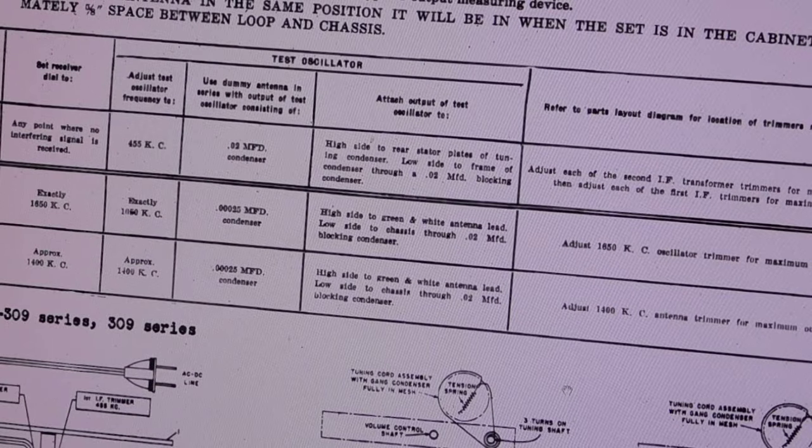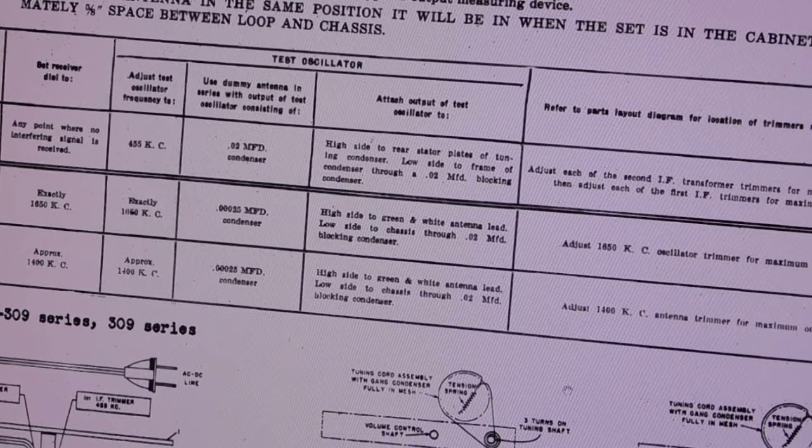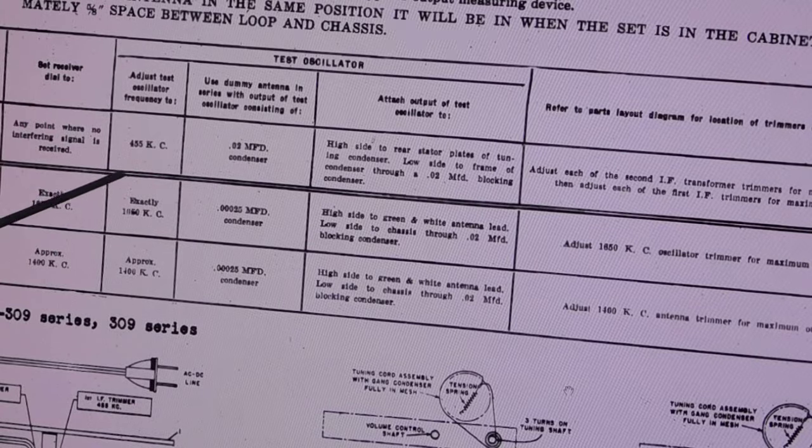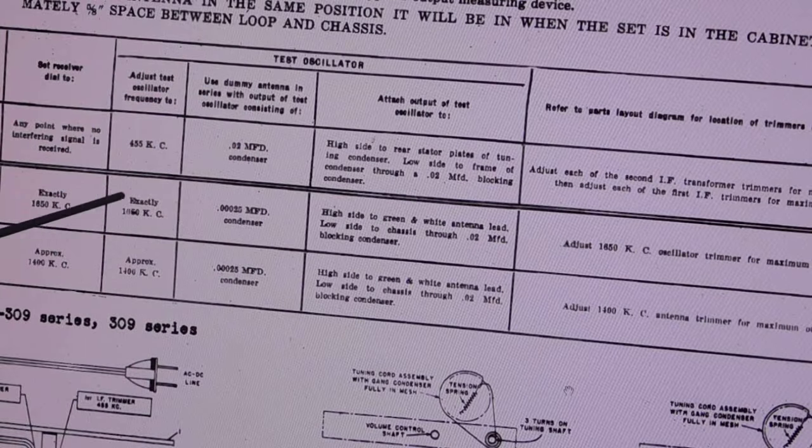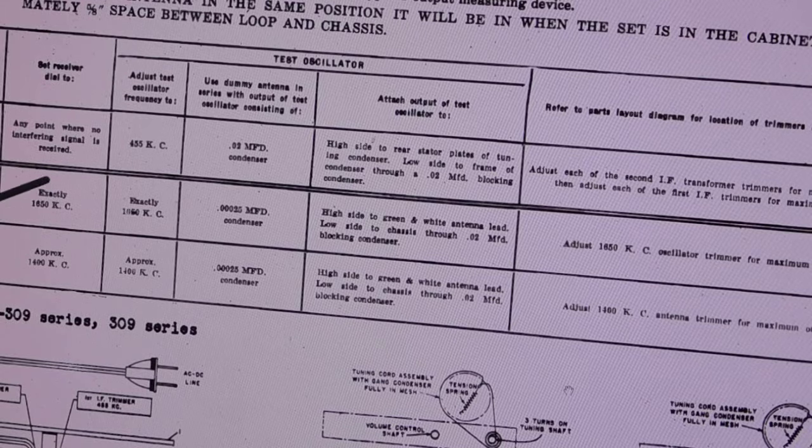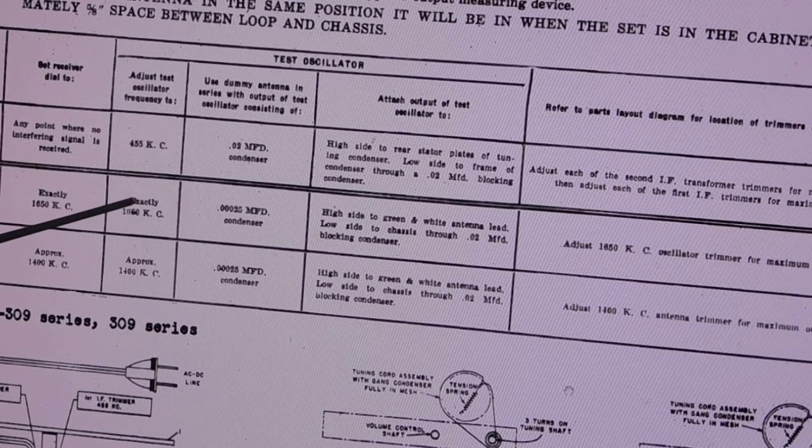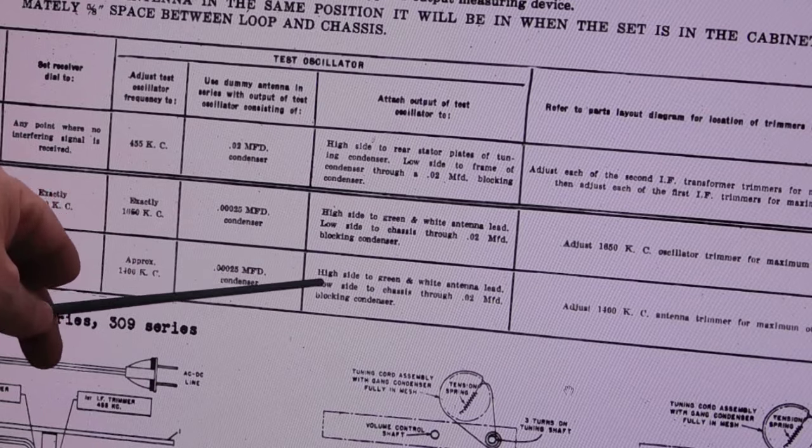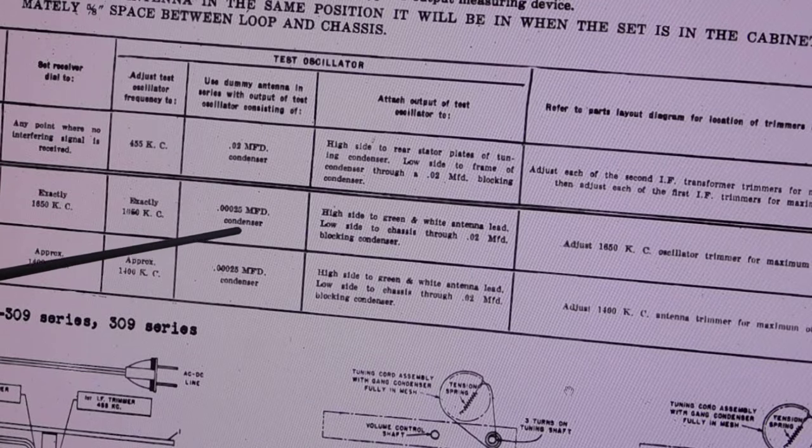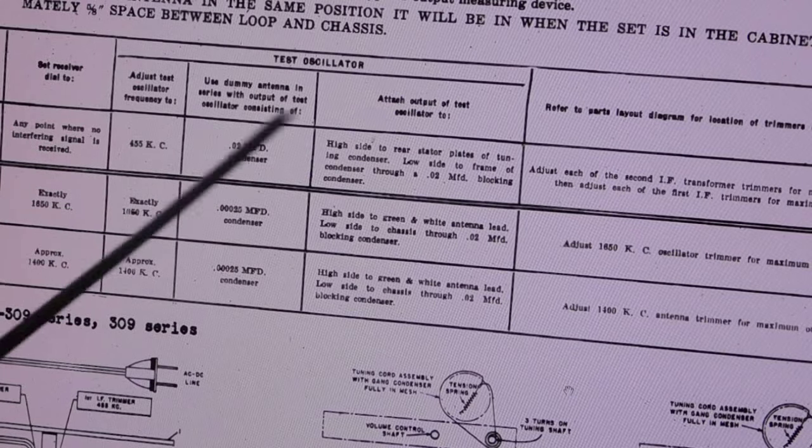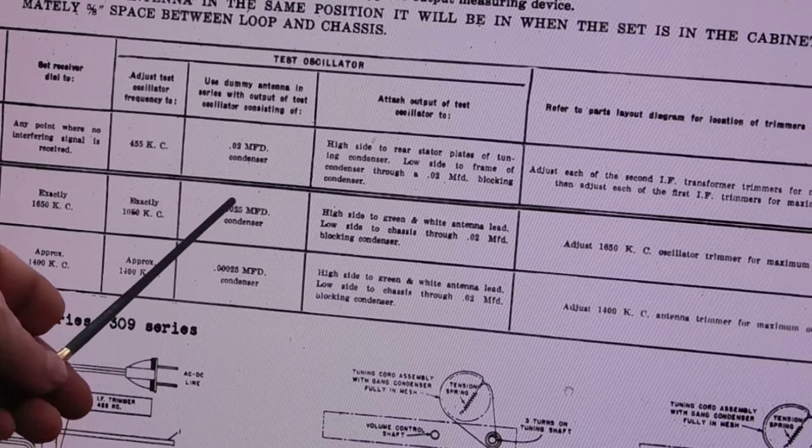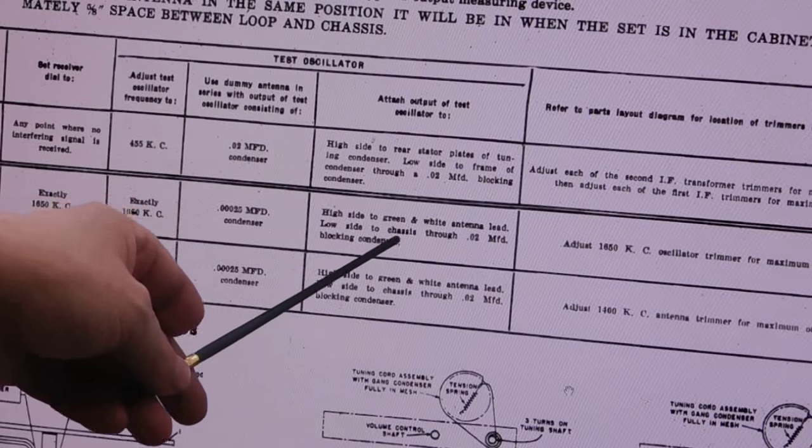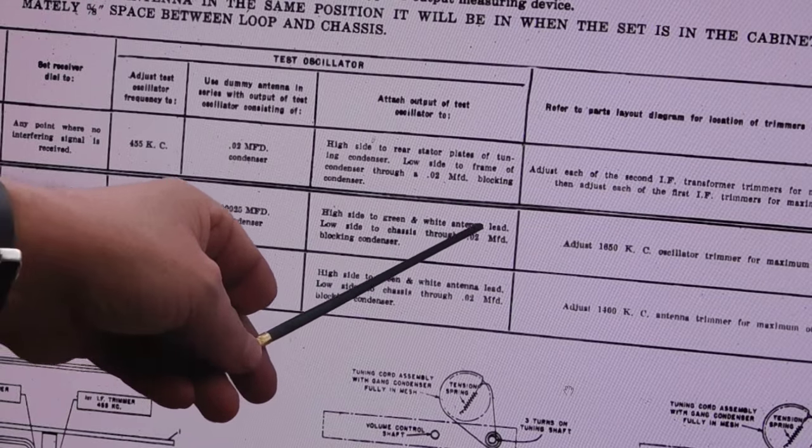As you can see here, it says use dummy antenna in series with the output of the test oscillator consisting of a 0.02 microfarad condenser and tells you where to hook it. If you follow that on down, this is for the 455 KC IF. Then when we get into the oscillator and antenna adjustments, they continue with the same connection point with the dummy antenna condenser.